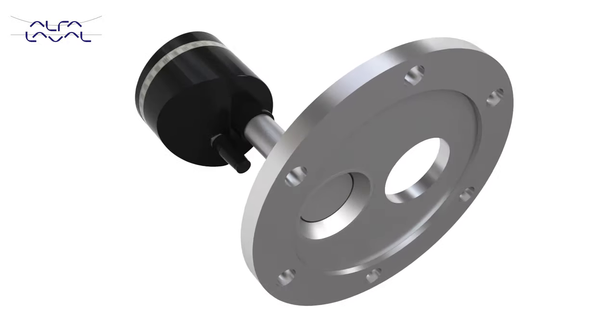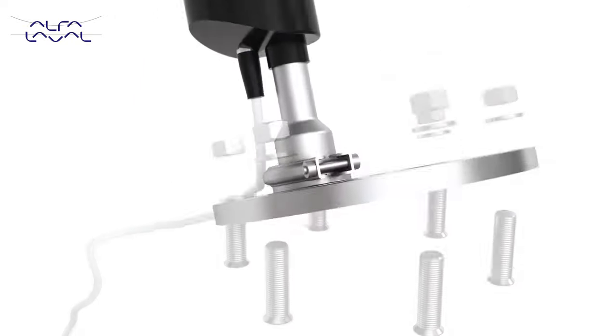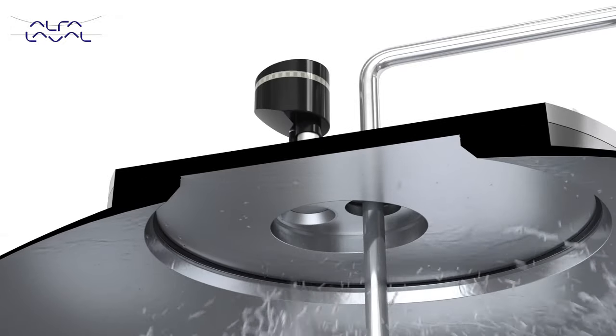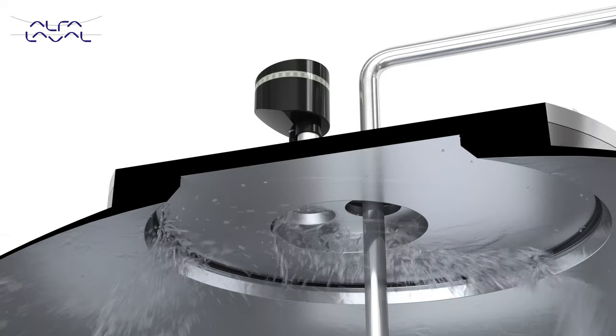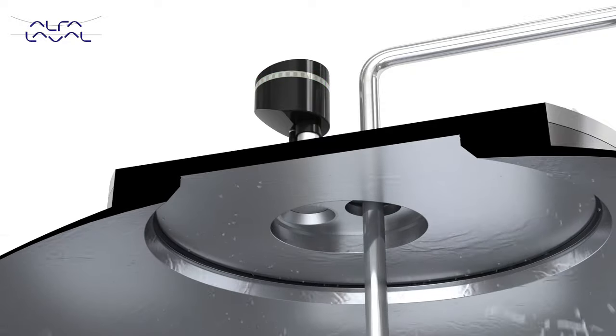The Alfa Laval RotorCheck sends alerts to the PLC should any irregularities occur, such as a drop or increase in CIP supply pressure or cleaning nozzle blockage. This gives you full control over your CIP process and peace of mind, knowing that monitoring and validation of your cleaning process is always available.